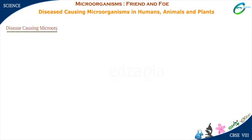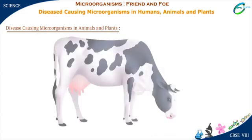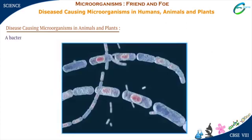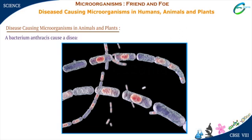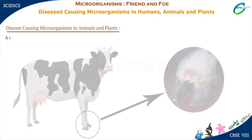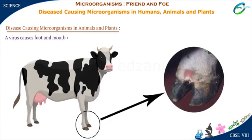Disease-causing microorganisms in animals and plants: There are some microorganisms which cause diseases in animals. The bacterium Bacillus anthracis causes a disease called anthrax in humans and cattle. Bacillus anthracis was discovered by Robert Koch in 1876. A virus causes foot and mouth disease in cattle.